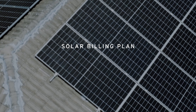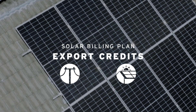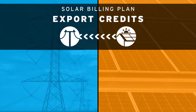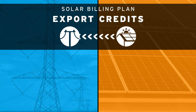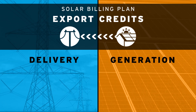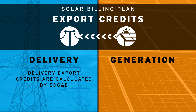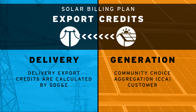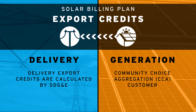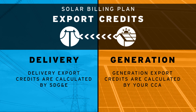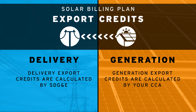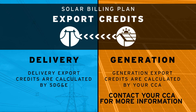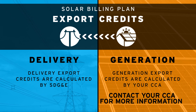As a Solar Billing Plan customer, you receive export credits for the energy your system sends to the grid. Export credits are split into two categories: delivery and generation. Delivery export credits are calculated by SDG&E. As a Community Choice Aggregation or CCA customer, your generation export credits are calculated by your CCA. Contact your CCA for more information about your generation export pricing and credits.